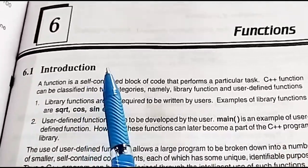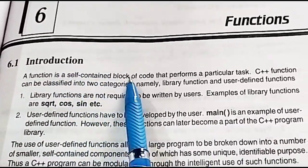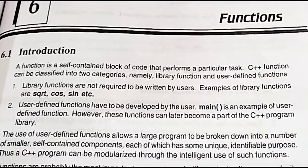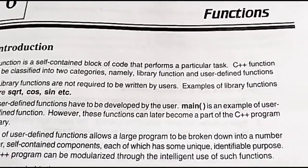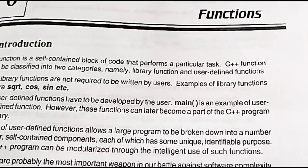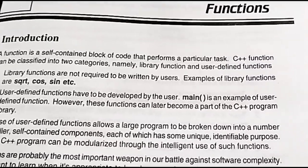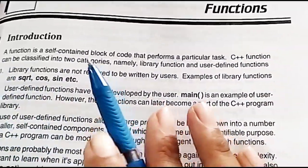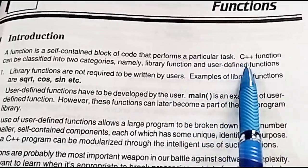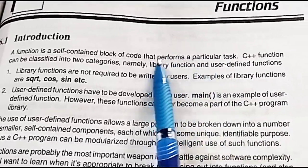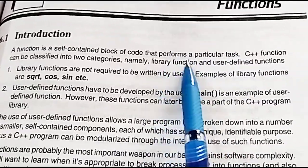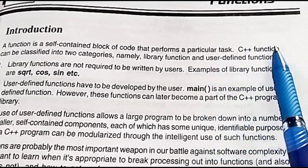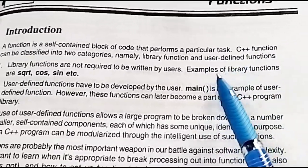For introduction, a function is a self-contained block of code that performs a particular task. In C++, functions are divided into two categories: library functions and user-defined functions. Library functions are already predefined in the C++ library and we don't need to define them, while user-defined functions we create, declare, and define ourselves.